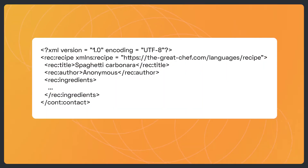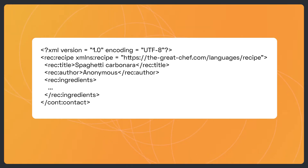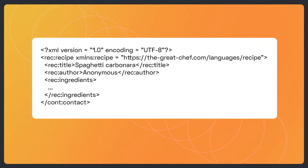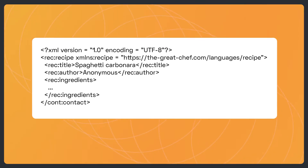A typical example of a URI that is not a URL is an XML namespace identifier. If you ever worked with XML, you may have found some documents similar to this one. The greatchap.com/languages/recipe string is a URI that identifies the XML namespace — a set of names for XML elements and attributes that allows you to define a cooking recipe. Although the format of the URI is the same as the URL, it doesn't allow you to access any resource on the web. However, using this format lets you reduce name clashing from namespaces.